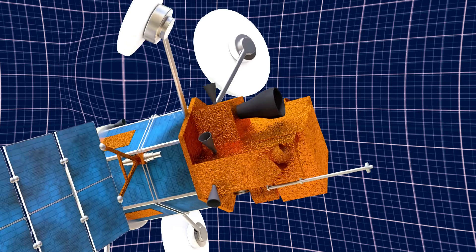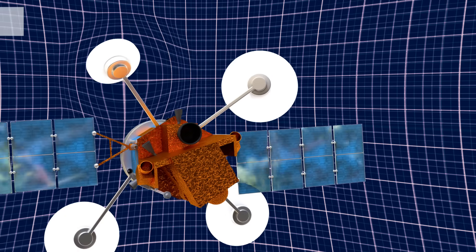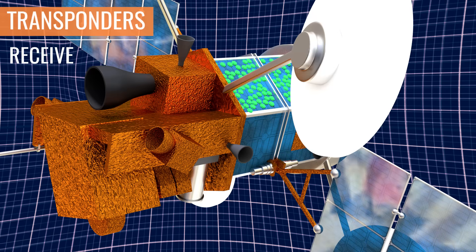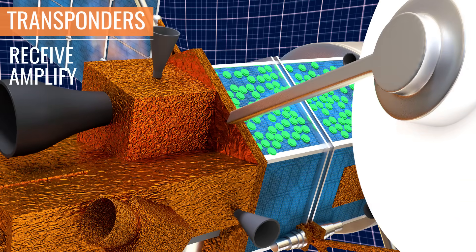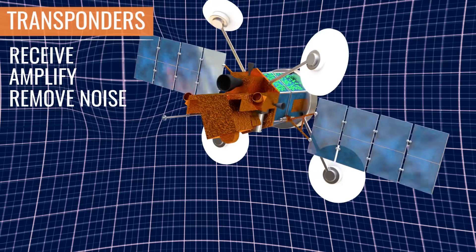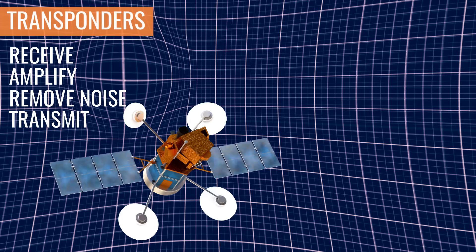The most important part of a satellite for communication purposes is the transponder. The transponders receive signals from the base station at one frequency, amplify the power of the signal, remove any noise, and transmit it back to Earth at a different frequency.